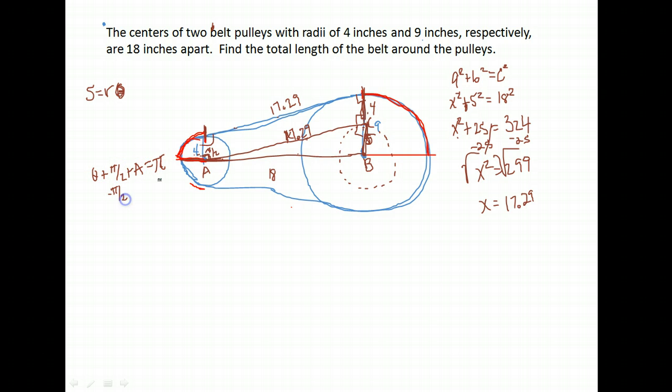I'm going to subtract this π/2 from both sides. One π minus a half a π gives me a half a π left. So in order to find my θ, I have θ + A. θ would be π/2 radians minus whatever this A is.